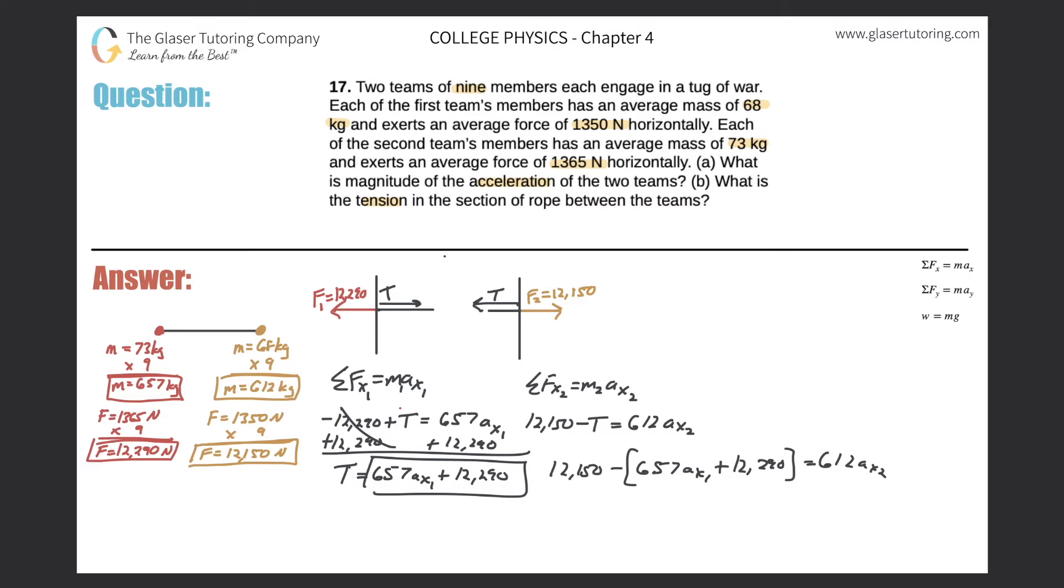So why don't we start to now start cleaning things up a little bit here. So we got 12,150 minus 657·a. So basically, I'm just distributing the negative here, minus 12,290 is going to equal 612·a. So now what am I going to do? Let me add this one over 657·a plus 657·a. I combine these two like terms on the left-hand side. So we have 12,150 plus 12,290. So we get 24,440. So 24,440 is equal to now. So we just add those two together. So we get 12,690·a. So I'll just double check because I don't want to make a silly mistake.